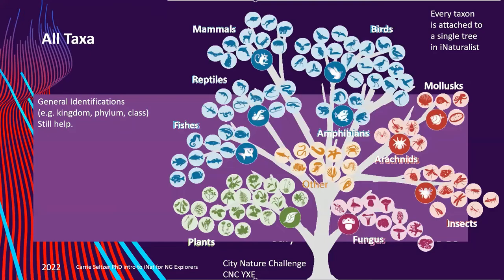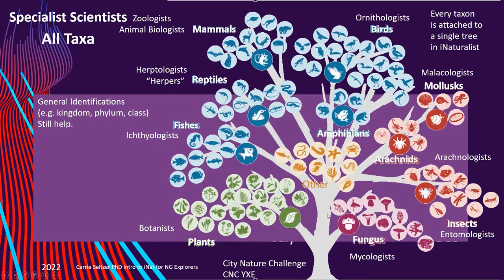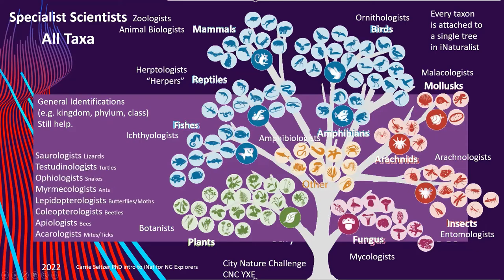Here are all the different kingdoms on iNaturalist attached to the iNaturalist tree. From a very young age we've all been looking at picture books and can tell if it's a bird, mammal, insect, or plant — and even just putting in a coarse identification like that will help bring along the specialist scientists. If you put in that it's a mammal, it'll bring along the zoologist or animal biologist. If it looks like a reptile, you'll bring along the herpers. If you put in fish, plant, or fungus, you will bring out all the various specialists to help out with that identification.